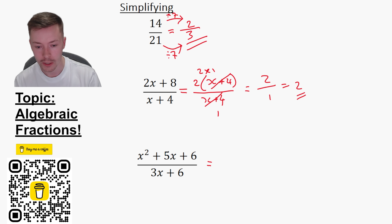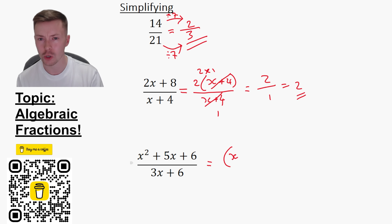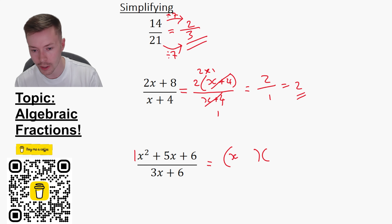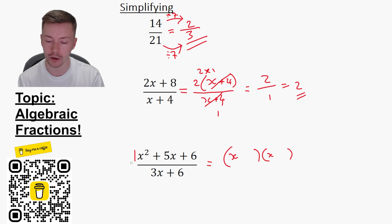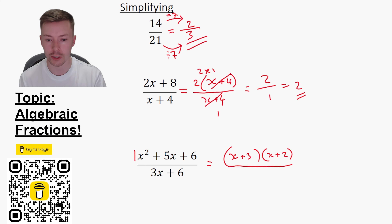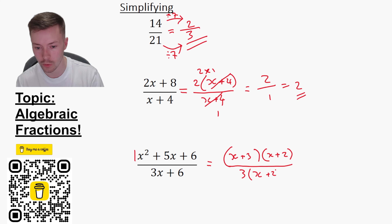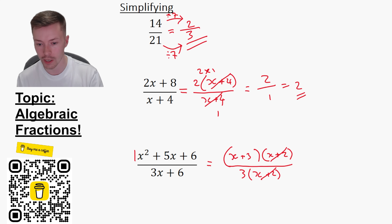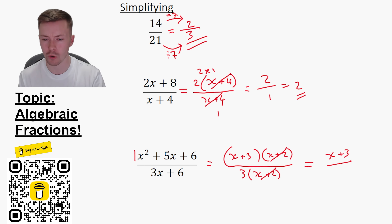Next thing: factorising a quadratic. It's got a coefficient of X squared of one — there's a one there, don't write that; mathematicians are lazy. The constants in the brackets have to multiply to make six and add to give five, so the numbers are two and three. Now factorise the denominator as well — that's going to give me three brackets X plus two. There's a common bracket on the numerator and denominator, so cancel those out, leaving X plus three on top and three on the bottom.